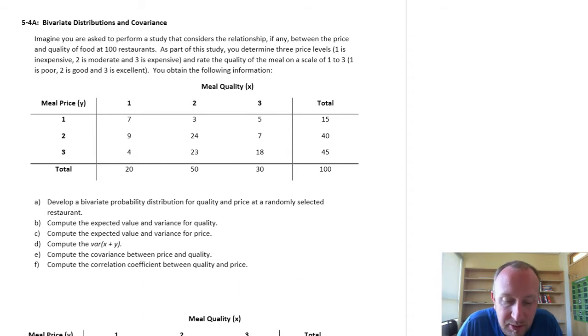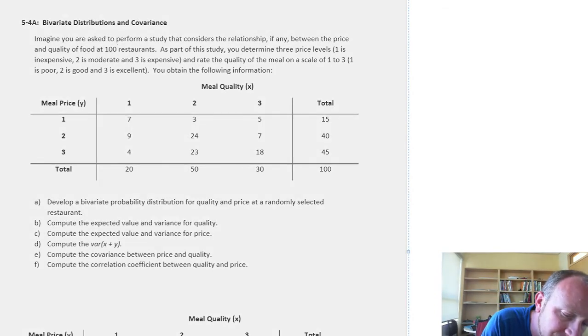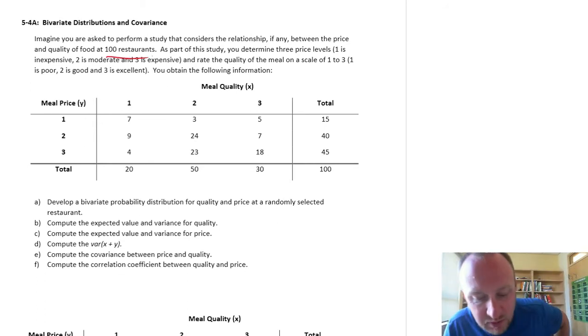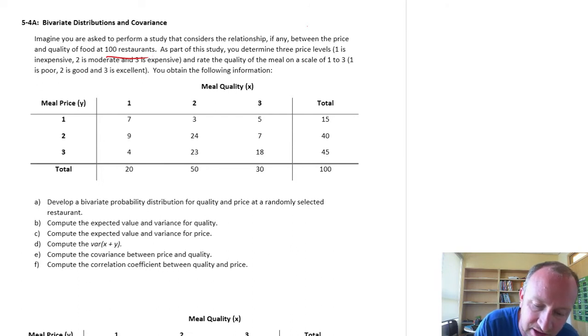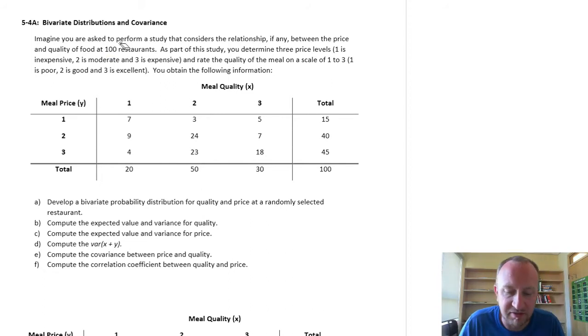So basically what we have, we've looked at 100 restaurants and we've classified these 100 restaurants based on three price levels. So one is an inexpensive restaurant, three is an expensive restaurant, and then we rated the quality of meal on a scale of one to three as well. So one is not very good, two is good, three is excellent. So we have here two discrete variables and we're looking at how these two variables behave when they're combined to a bivariate distribution.